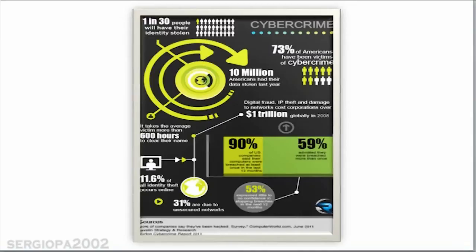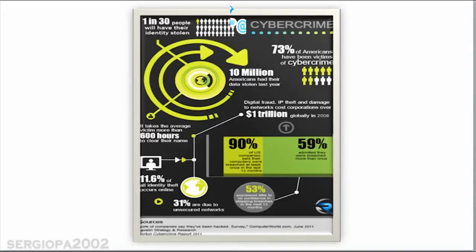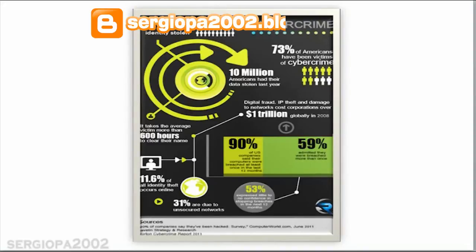According to a survey made by computerworld.com in June 2011, it predicts that 1 in 30 people will have their identity stolen at any given time. It also states that 73% of Americans have already been victims of cybercrime, and that the average time a person needs to take to clear their name is 600 hours, and that 11.6% of all identity theft occurs online.